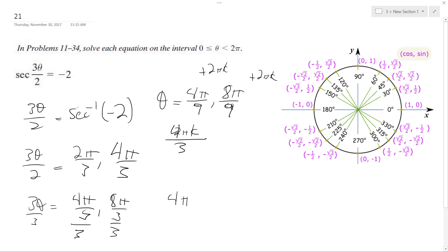So if I run these, 4 pi over 9, 8 pi over 9 for theta. If I add 4 pi k over 3 to 4 pi over 9, it becomes 8 pi k over...